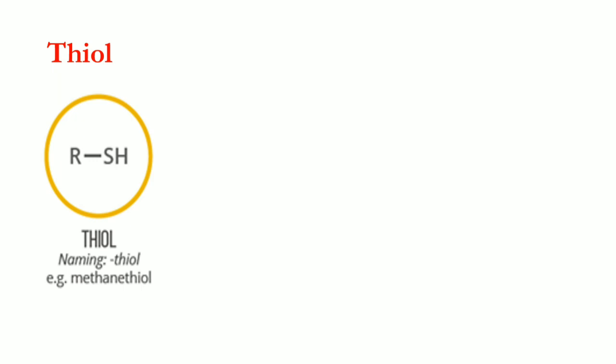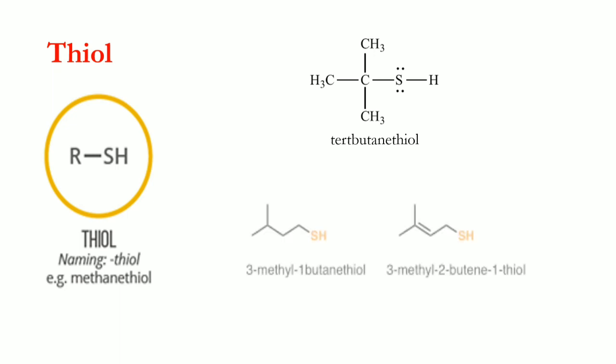Thiols are characterized by the thiol group -SH, and we use the suffix 'thiol' for IUPAC naming. The simplest is methanethiol. Another example is tert-butanethiol: it has a one-two-three-four carbon chain, and the carbon where the thiol group is attached is a tertiary carbon — bonded to three other carbons — hence called tert-butanethiol.